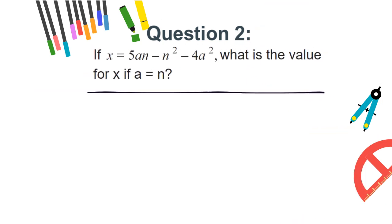Question 2. If x equals 5an minus n squared minus 4a squared, what is the value for x if a equals n? a. 1. b. 0. c. n squared. or d. a squared.